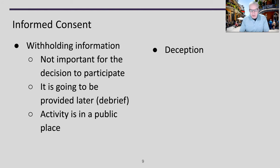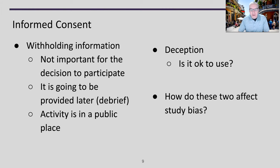Revisiting deception — it's unlikely you would use it, but it is a possible strategy. Whether withholding information or using deception, we have to be careful about how these affect study bias. If I don't tell someone some information, or if I use deception, could it cause doubt in my results? As discussed when talking about threats to validity, these are things you may want to worry about.